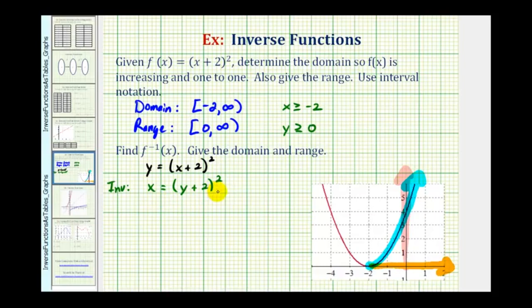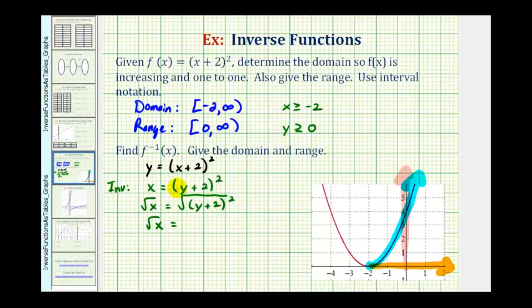The first step: we'll take the square root of both sides of this equation. So we have the square root of x equals the square root of the quantity y plus two squared. Normally this would be the absolute value of y plus two, but because of the restrictions here we don't have to worry about that — this would just be y plus two. Last step, we'll subtract two on both sides: the square root of x minus two equals y. This is our inverse function solved for y.